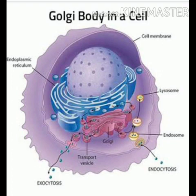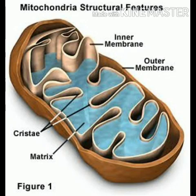The next organelle is the Golgi apparatus. It helps in the formation of lysosomes and is also responsible for processing the proteins and enzymes required for the cell. The next very important organelle is the mitochondria, also called the powerhouse of the cell, as it helps in generating energy in the form of ATP — adenosine triphosphate — which is produced during the process of respiration.